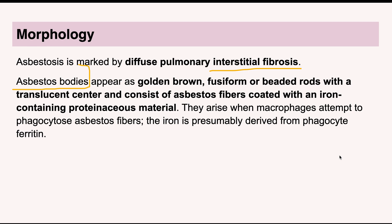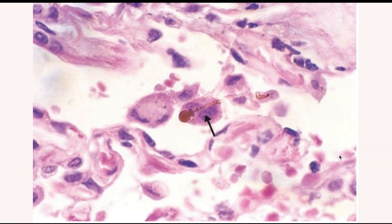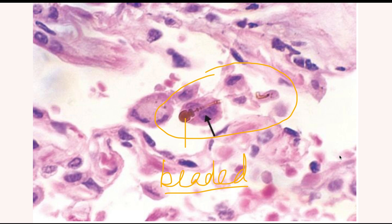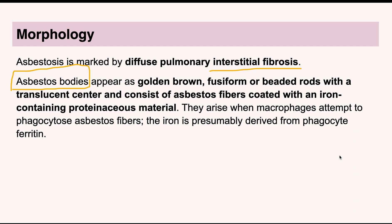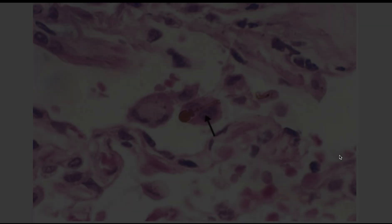There is something known as asbestos bodies which we can see. In the picture, the brown-colored structure is the asbestos body — it is a beaded structure with a translucent center. The translucent center is the asbestos fiber itself, and upon that fiber, iron — coming from the macrophages — is deposited. This is the asbestos body seen on routine histochemical staining. It is described as a golden-brown beaded rod with a translucent center, coated with iron-containing proteinaceous material.